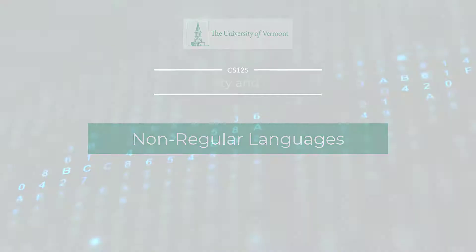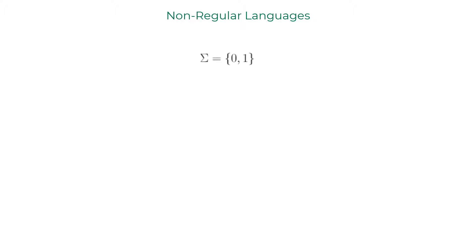Given the alphabet sigma equals 0 and 1, we have sigma star, which is a countably infinite set of strings starting with epsilon, 0, 1, 00, 01, 10, 11, and so on, which have a correspondence with natural numbers.